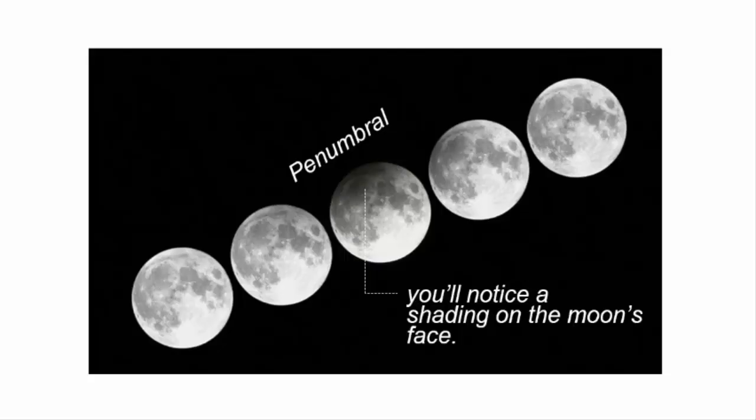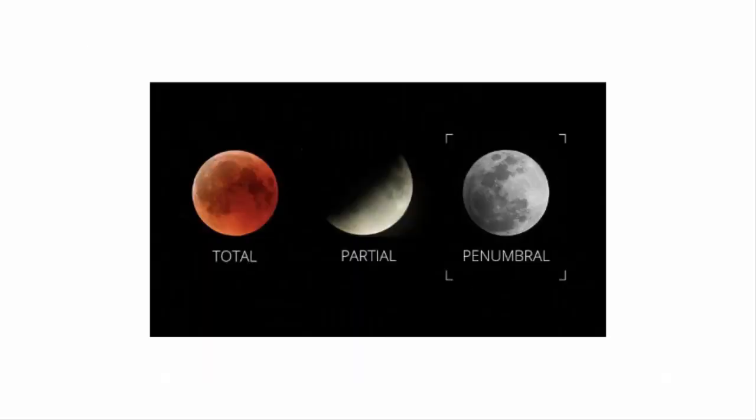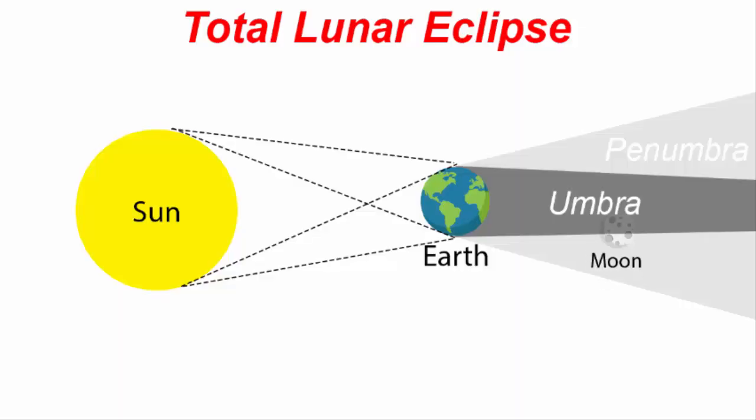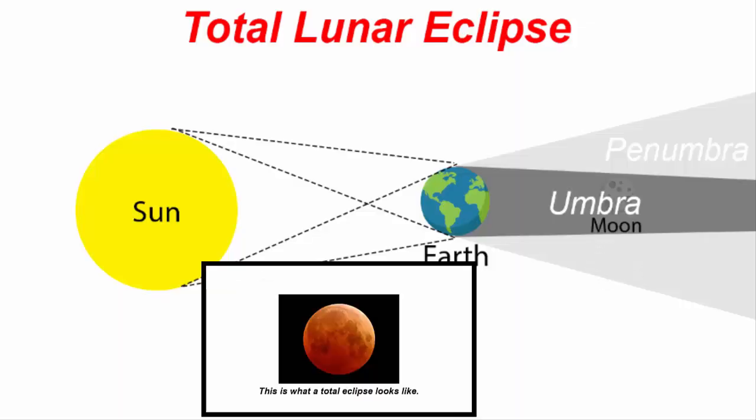There are three kinds of lunar eclipses: total, partial and penumbral. In a total eclipse of the moon, the inner part of the earth's shadow, which is called the umbra, falls on the moon's face.